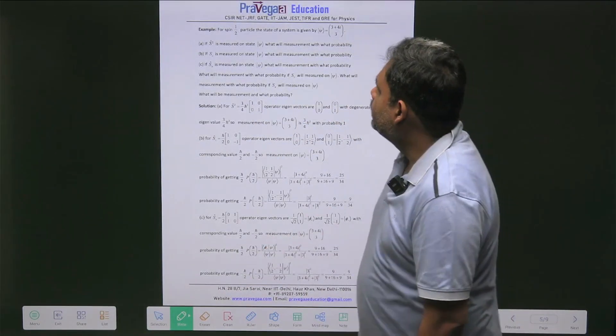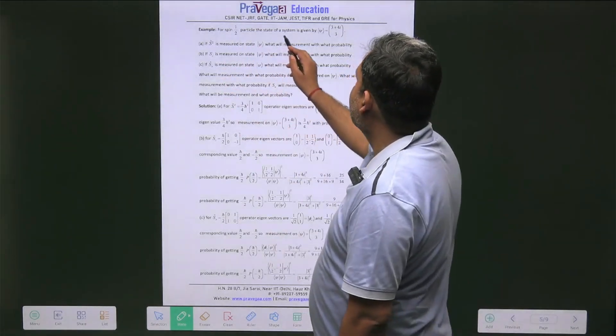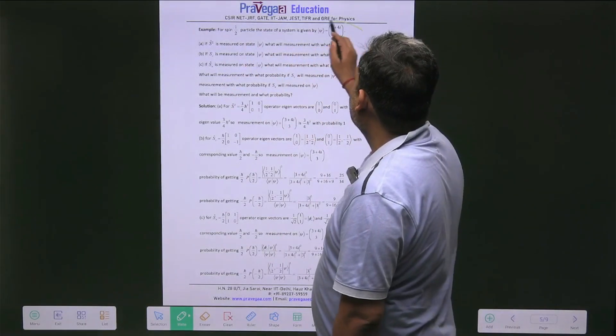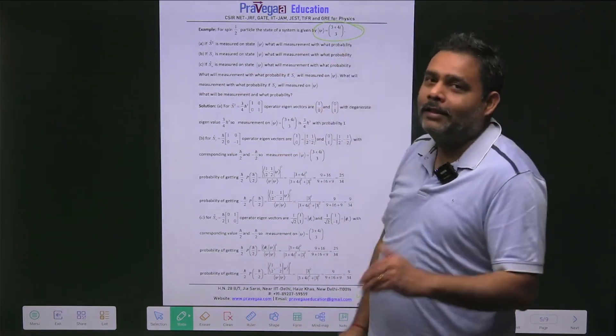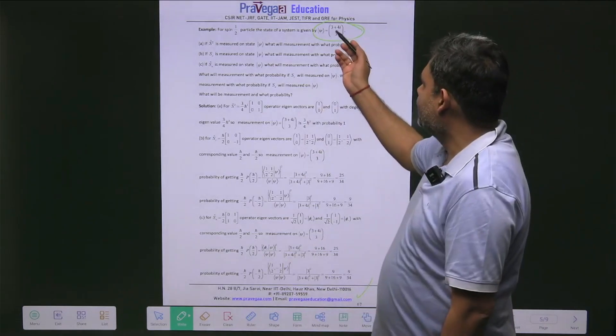The question is for a spin-1/2 particle, a state of the system is given by psi, and this is complex. This question is a little bit tougher because here psi is given as (3+4i, 3).